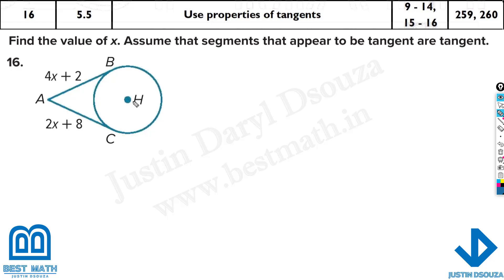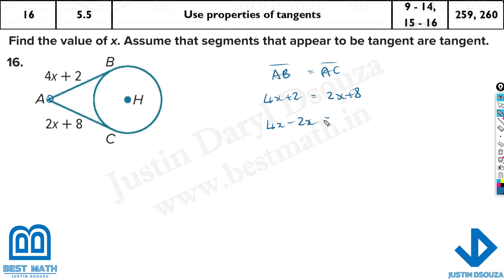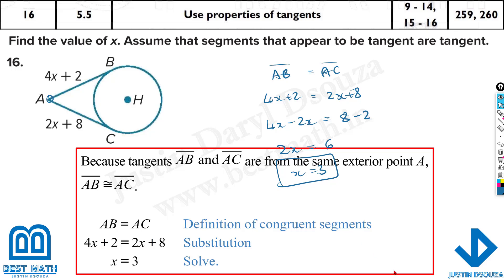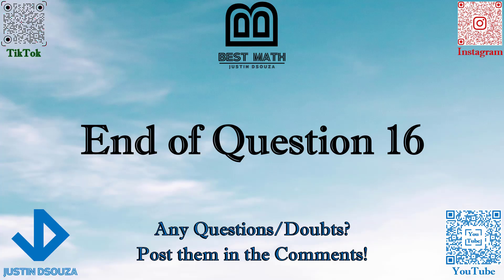For the last problem, both tangents share the same exterior point A, so AB is congruent to AC: 4x plus 2 equals 2x plus 8. Taking 2x to the left and 2 to the right: 2x equals 6, so x equals 3. They asked us to find x, and that's the answer. Pretty easy problems. That is the end of this question — I hope it is clear. If you have any doubts, please re-watch or post in the comments, and head on to the next video.